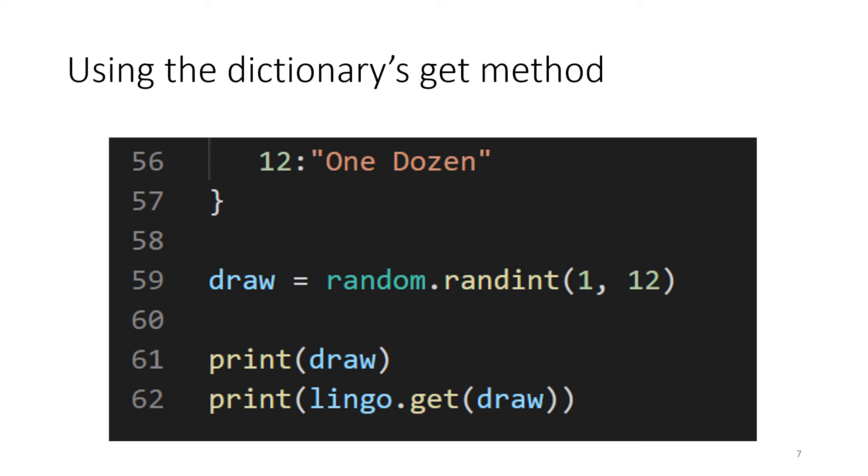So we are using our dictionary, which we call 'lingo'. We are using the get method of the dictionary. And then the argument of the get method is the key. So we are using this random number from 59 as the key. So whatever number we happen to draw, we are going to get the corresponding phrase in our dictionary.